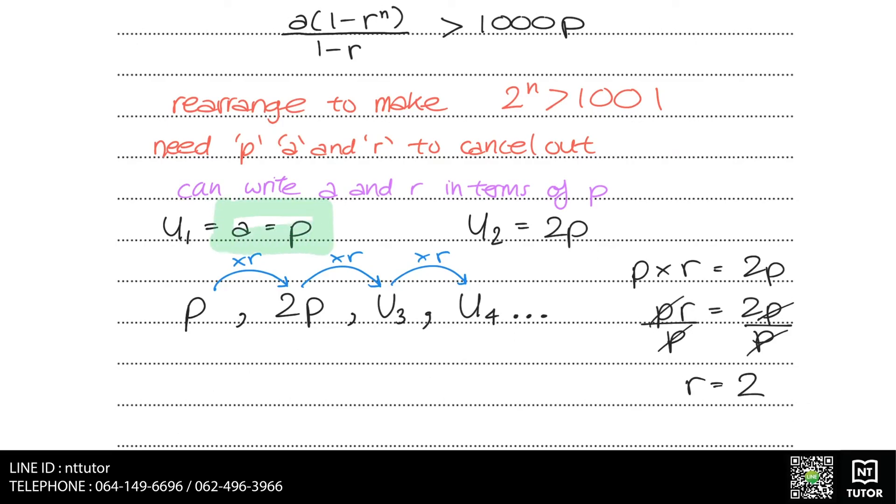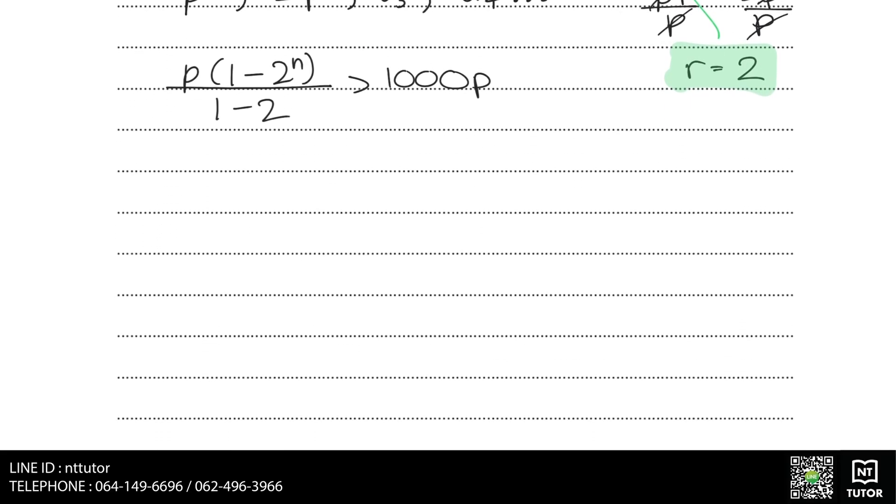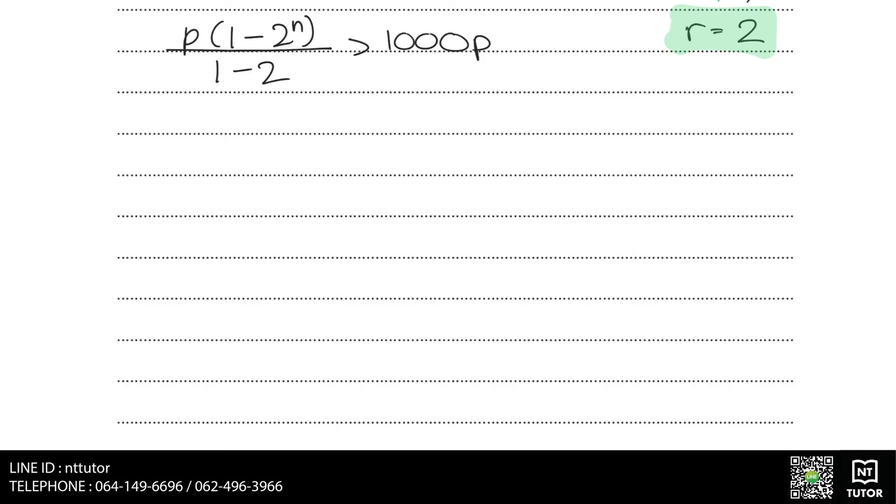With r equals 2 and a equals p, we can substitute these values for r and a back into our original inequality. Now our inequality is only in terms of n and p, so we need to try and cancel out the p.